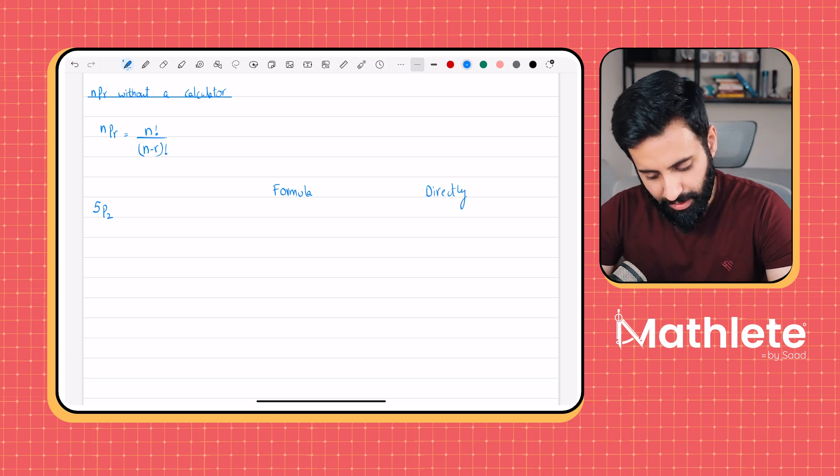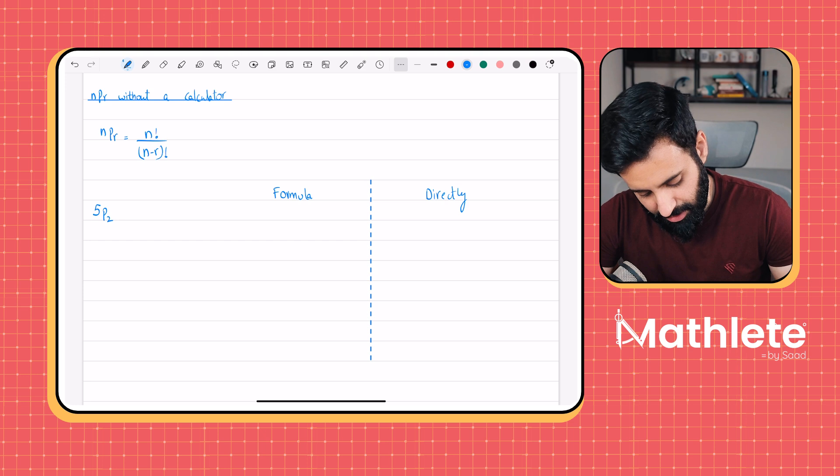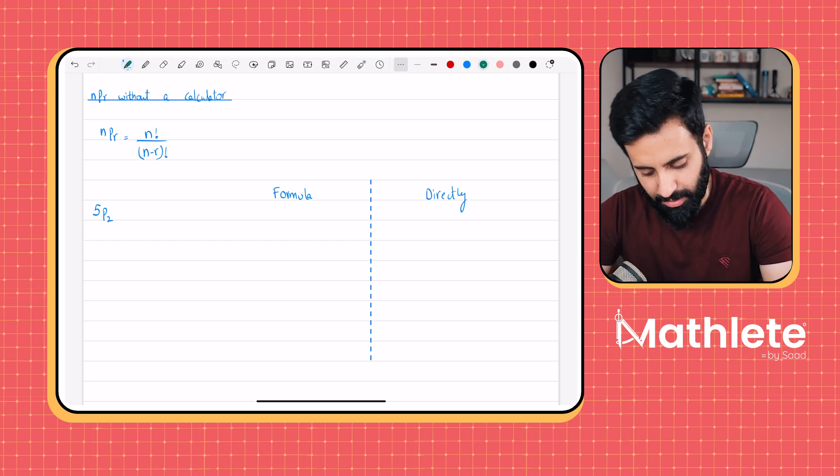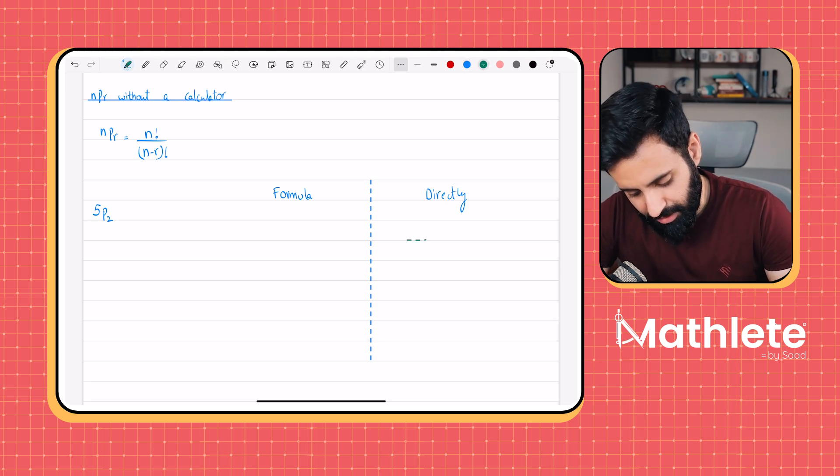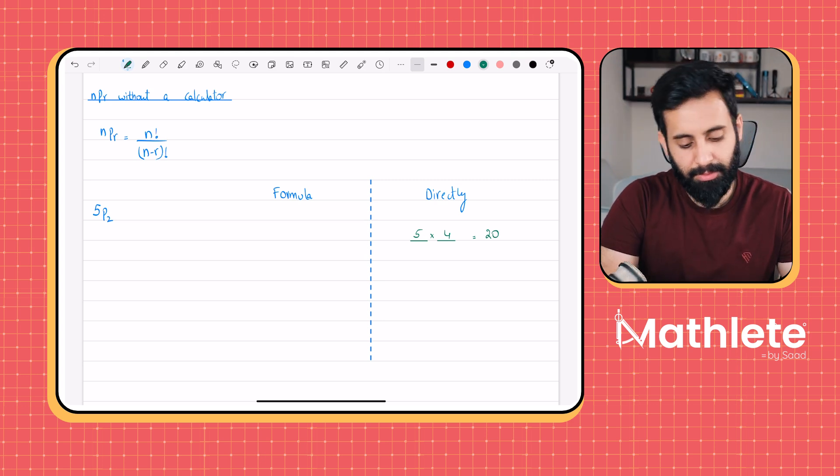Now, if you apply the theory behind it, 5P2 basically means that you have five objects, and of the five, you wish to arrange only two of them. So that means you have five objects, five options to choose from, and you have room for two. So in the first place, you have five options. In the second place, you have four options. So altogether, you have 20 ways to arrange two objects from five.